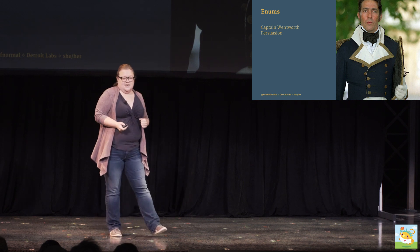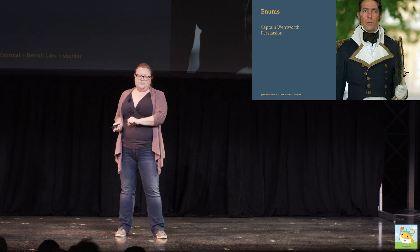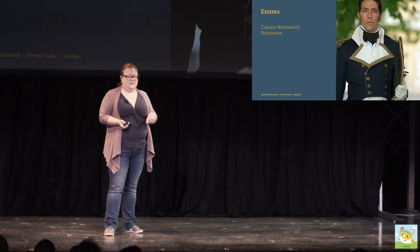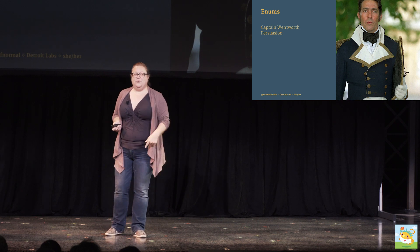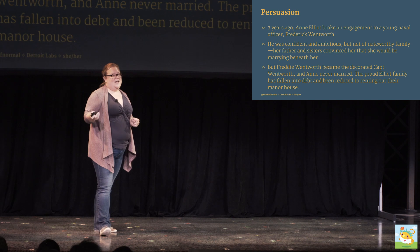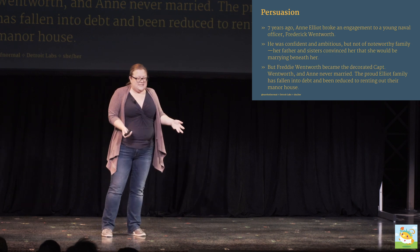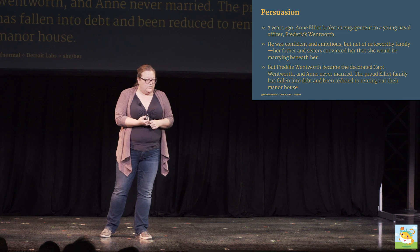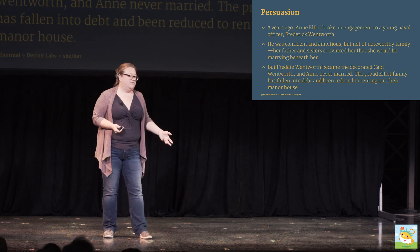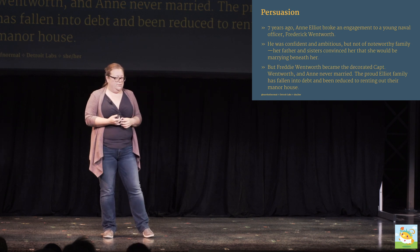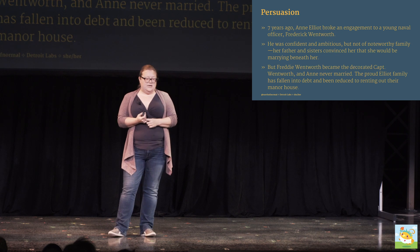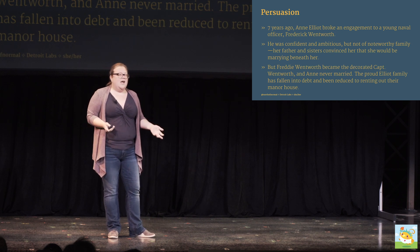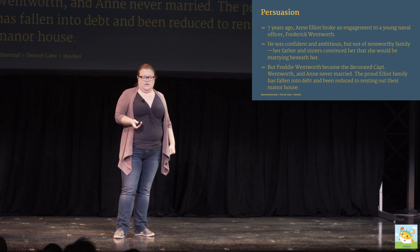So that was protocols and delegates. Let's talk about another thing — this is not necessarily my favorite Swift feature, but it's definitely my favorite Jane Austen hero. I used to have a copy of Persuasion in my car; if I was stuck in traffic, I'd go to the best parts and read those. I don't do that anymore because I have it on my phone — also, I don't have a car. Persuasion opens several years after a bunch of things have happened. Seven years before the novel opens, Anne Elliot broke an engagement with Frederick Wentworth. He was an ambitious naval officer, but he didn't come from a prominent family. Anne's father had a title and a manor house and all this wealth and prestige, and people convinced her that she would be marrying beneath her.